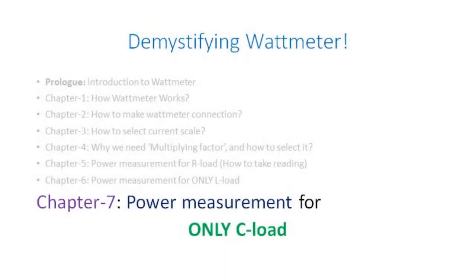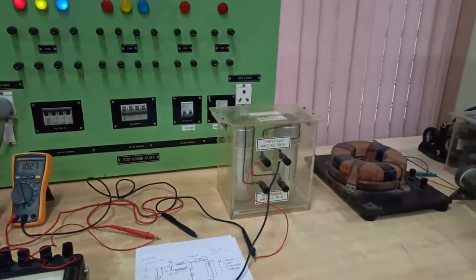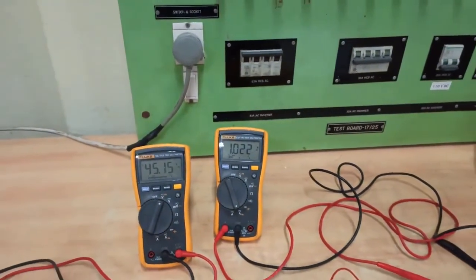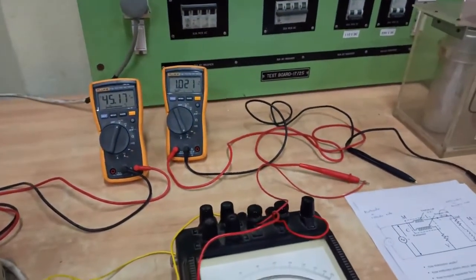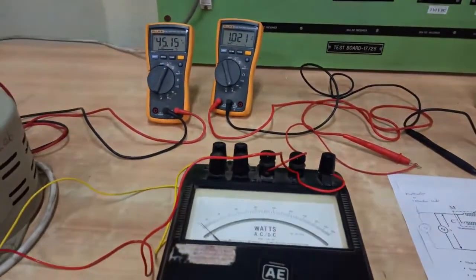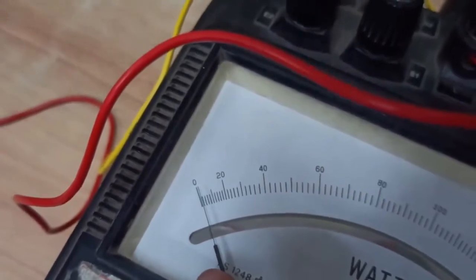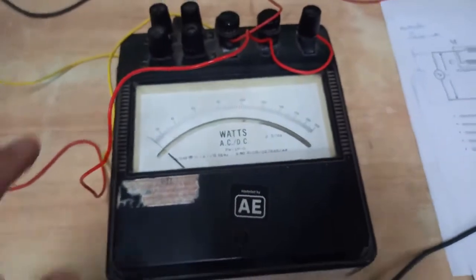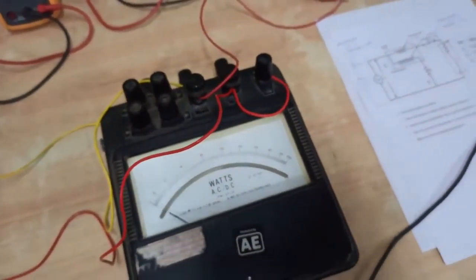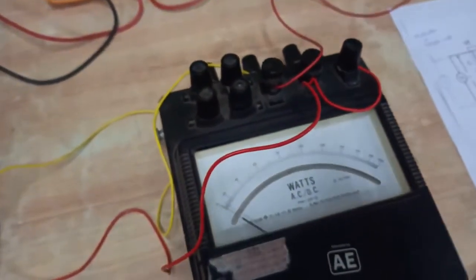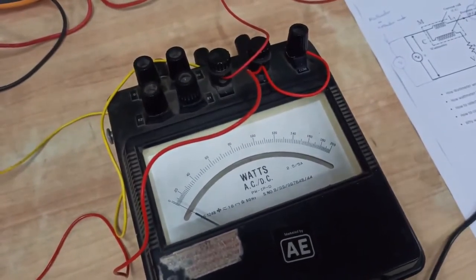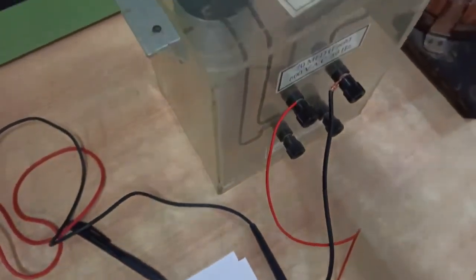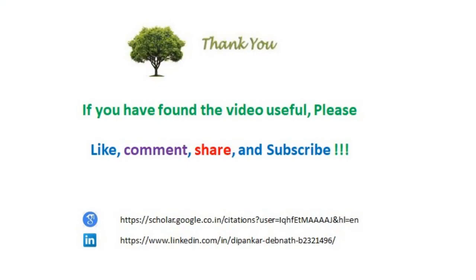Next we observe the wattmeter reading with only a capacitor load connected. The voltage across the capacitor is 45 V and one ampere of current is flowing through it. The wattmeter reads approximately half a division, so the value is 1 multiplied by the multiplying factor of 4, giving 4 W. Ideally this should be zero, but non-ideal capacitors have some losses, which are reflected in the wattmeter reading.